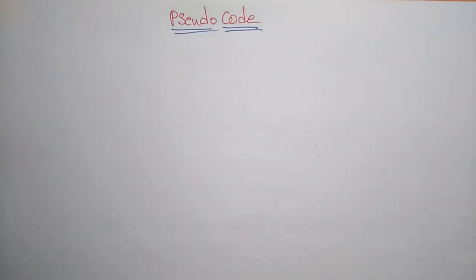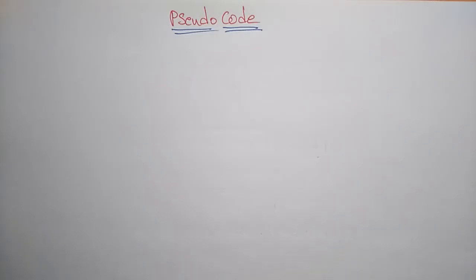Hi students, welcome back. In the previous video, I explained what is an algorithm. An algorithm is nothing but a step by step method for solving a particular problem or doing a task. The algorithm can be expressed in many kinds of notations: natural languages, pseudocode, flowchart, and programming language.